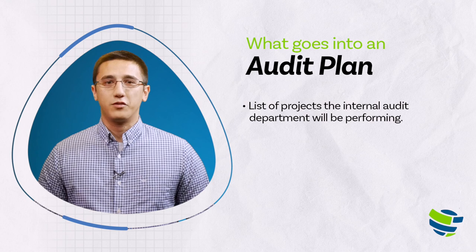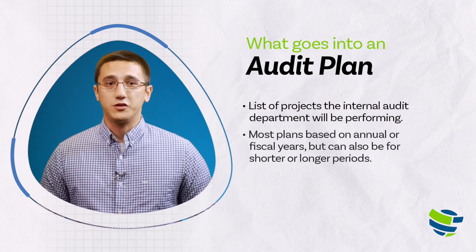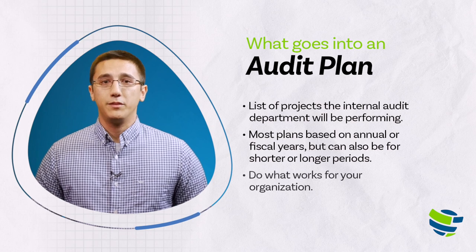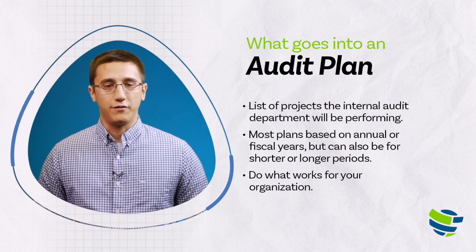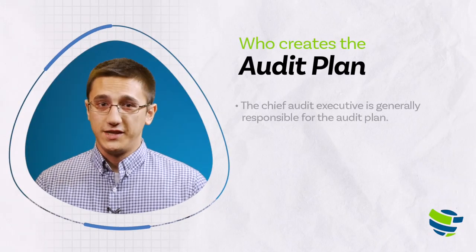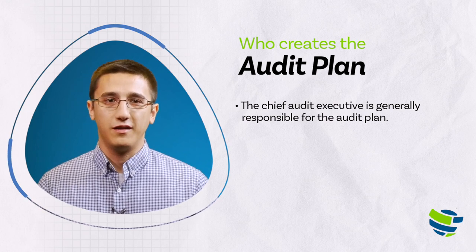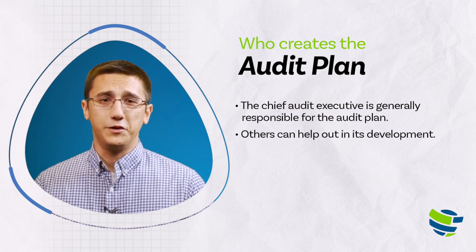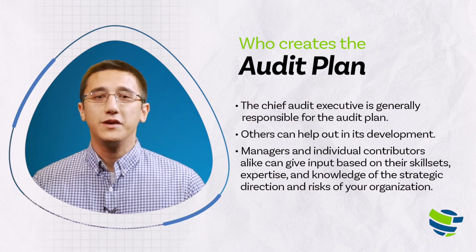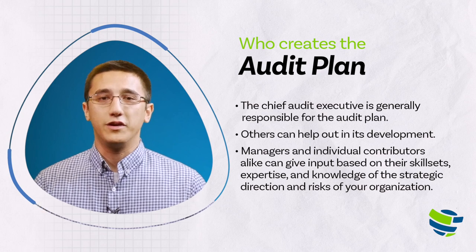The audit plan itself is basically a list of projects the internal audit department will be performing for the defined period. Most plans are based on annual or fiscal calendars, but they can be for shorter or longer periods. If different timing makes sense for your organization for whatever reason, don't be afraid to go outside of what might be traditional. The Chief Audit Executive, or the CAE, is typically responsible for the preparation and execution of the department's audit plan, but that doesn't mean no one else can help out in its development. Managers and individual contributors alike can give input based on their skill sets or areas of expertise and their knowledge of the strategic direction and risks that are important in your organization.